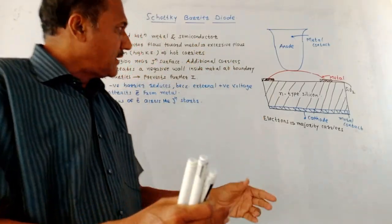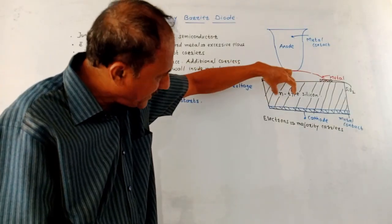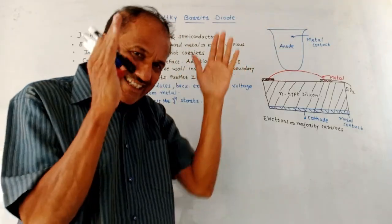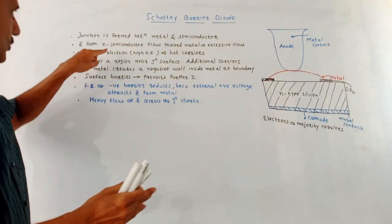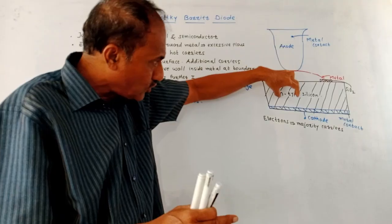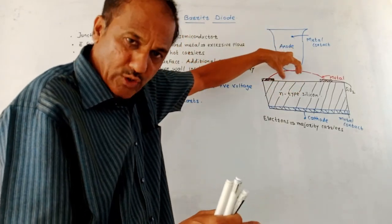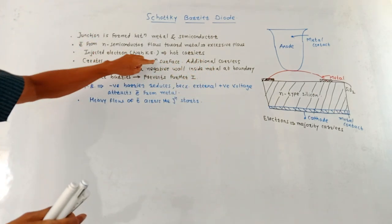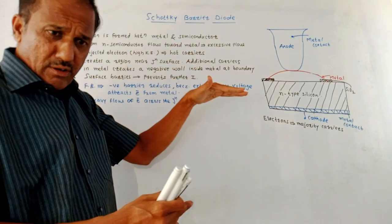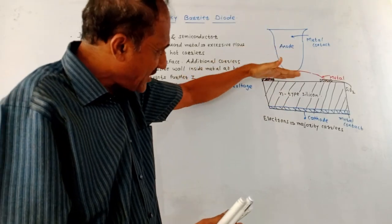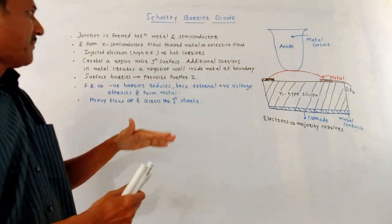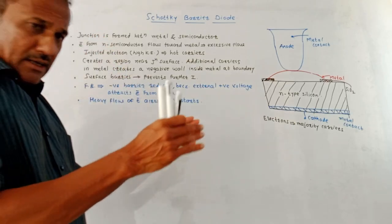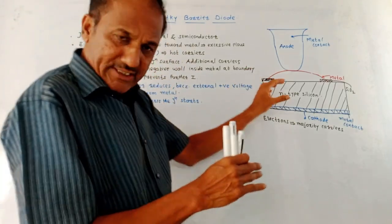This is called excessive flow of electrons. The kinetic energy of such electrons transferring from the N-type semiconductor towards the metal is more, so these electrons are called hot carriers. Injected electrons — electrons transferring from N-type semiconductor to the metal — are having high kinetic energy, which is why they are called hot carriers. This creates a region near the junction surface.